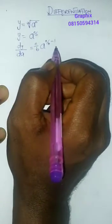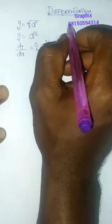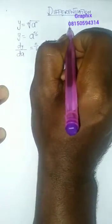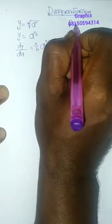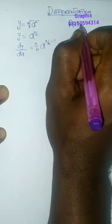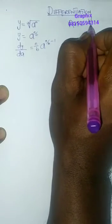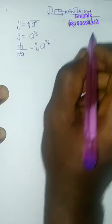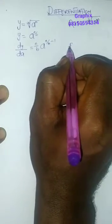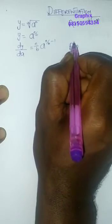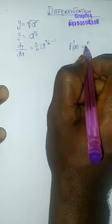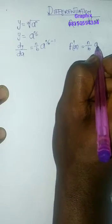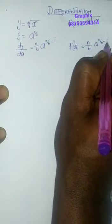What if I want to use f notation? I'll put it this way by saying f is a function of a, so I'll be having the b-th root of aⁿ. It means that f prime of a will give me n over b times a to the n over b minus one.